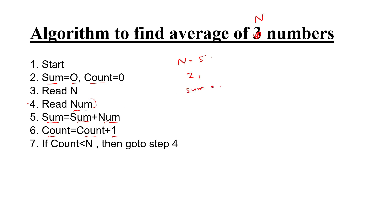Sum initial value is 0. So 0 plus 2 equals 2, and count is equal to count plus 1, that is 0 plus 1 equals 1. Now check: count less than N — 1 less than 5.